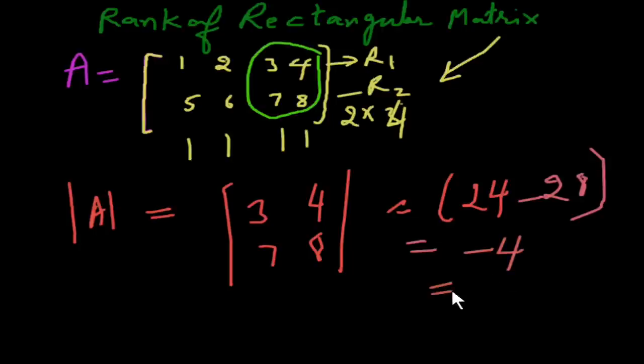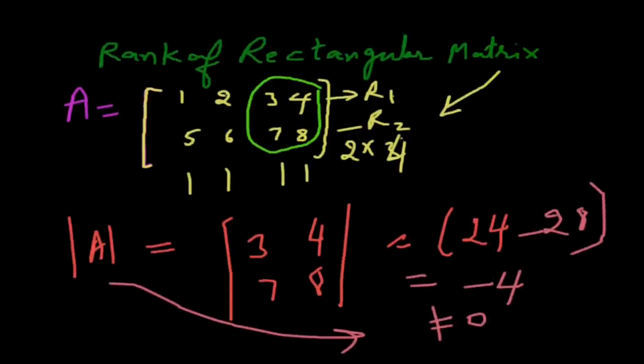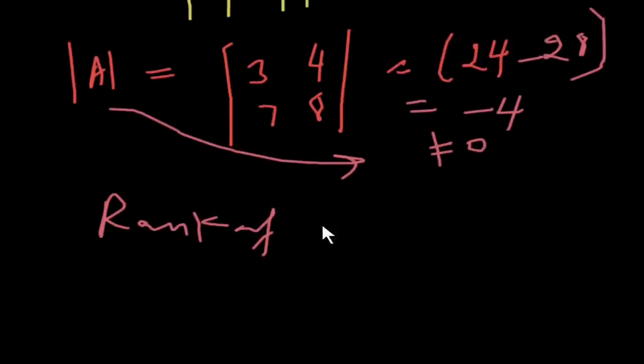And its answer is minus 4, but not 0. So, determinant of it is not 0. So, rank of this rectangular matrix will be 2, because this sub-matrix is of 2 rows and 2 columns.